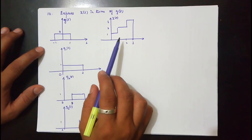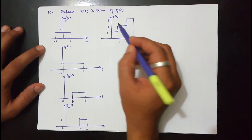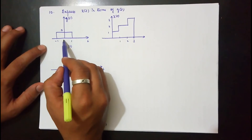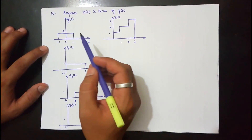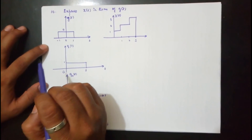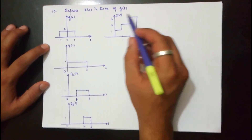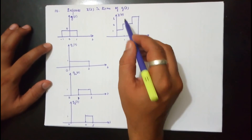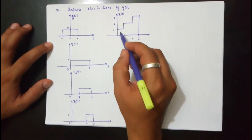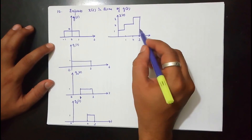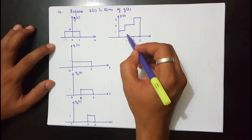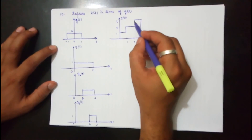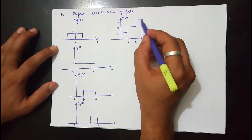This is one more way in which the same type of question can be asked. The only change here is that g(t) in the previous cases extended from 0 to 1 in the first case and 0 to 3 in the second case. Here it extends from minus 1 to 1. You are asked to express x(t) in terms of g(t). Use the same method — slice x(t) horizontally. You will get 3 slices: one extends from 0 to 3 with an amplitude of 1, another from 1 to 3 with an amplitude of 1, and a third from 2 to 3 with an amplitude of 1.